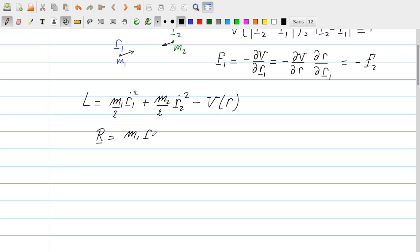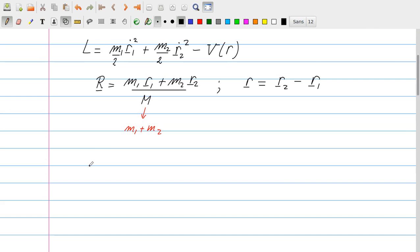Which is given as m1 r1 plus m2 r2 divided by the total mass, so recall that M is always m1 plus m2. And we have a relative coordinate r, which is r2 minus r1. And it's useful to rewrite now the r1 and r2 in terms of this capital R and the lowercase r.